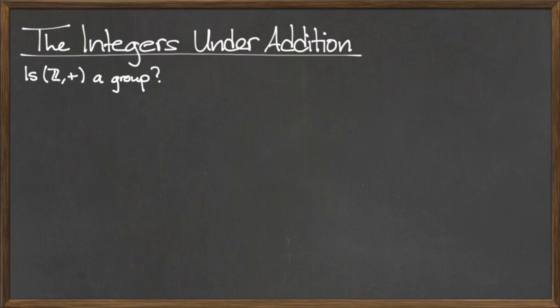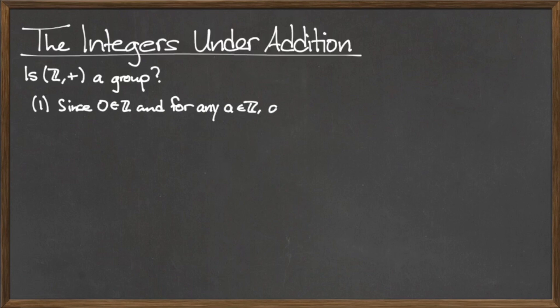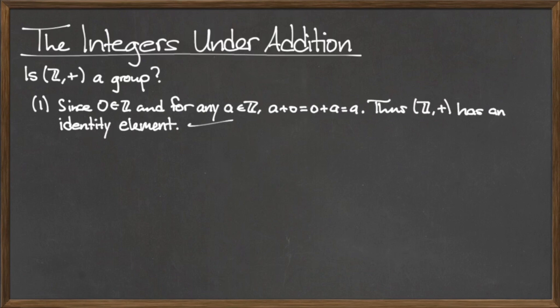As with the trivial group, we must show that the integers under addition satisfy the identity, inverse, and associativity requirements. Since 0 is an integer, and for any integer a, a plus 0 equals 0 plus a equals a. Thus, the set of integers under addition does contain an identity element.